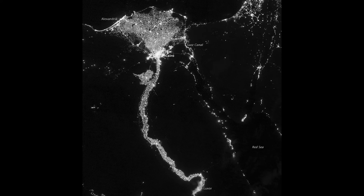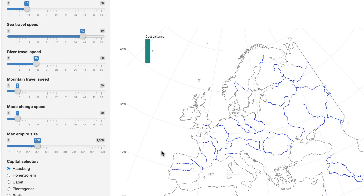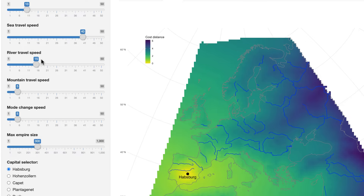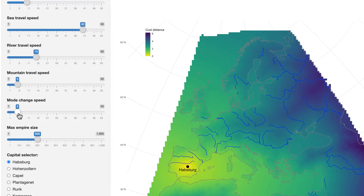Some countries like Egypt are concentrated along a river — everybody lives along the Nile — while other rivers like the Rio Grande between the USA and Mexico constitute borders and barriers. In this simulation, that double effect is represented by a travel speed for rivers when going along them, and a mode change speed slider, which represents the cost of changing mode of travel from sea to land or from river to land.